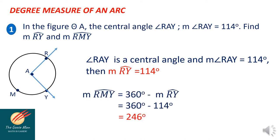Next, the measure of arc R-M-Y is equal to 360 degrees minus the measure of arc R-Y. Since the measure of arc R-Y is 114 degrees, we subtract it from 360, so the answer is equal to 246 degrees.